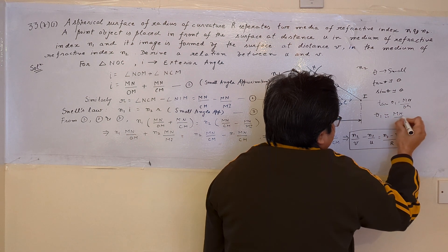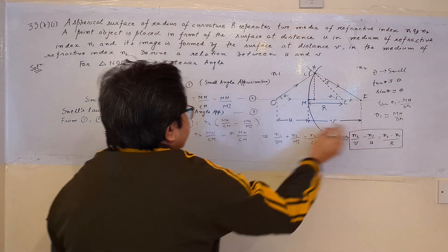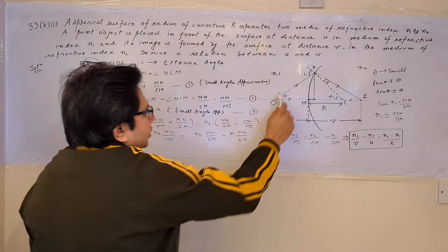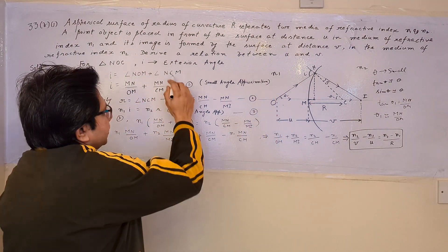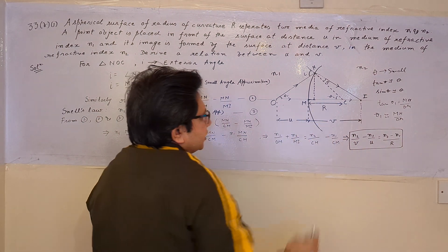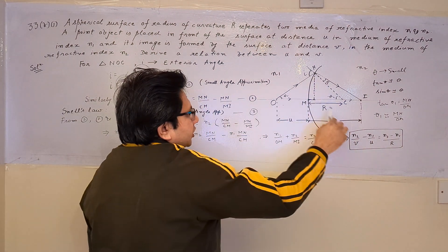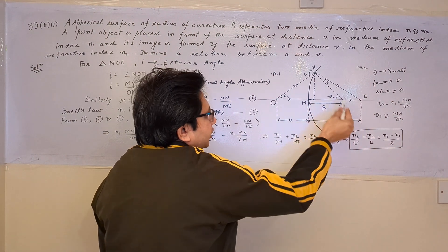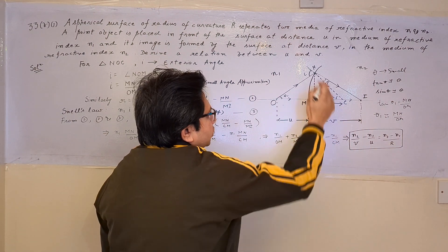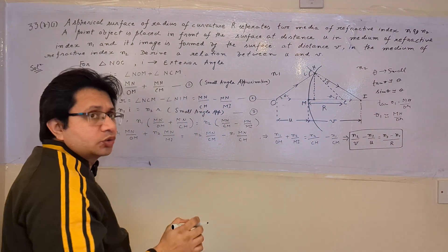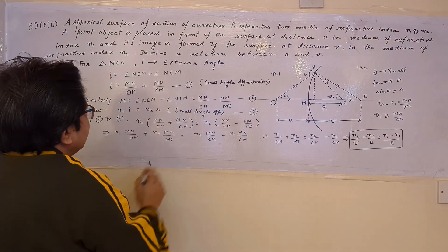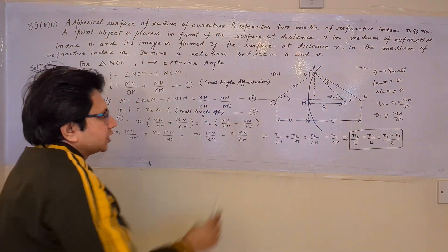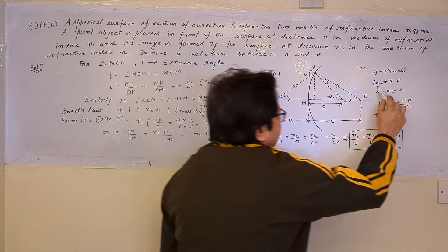So we put MN upon OM in place of angle NOM. Similarly, from triangle NCM, tan theta2 equals MN upon CM, so theta2 is nearly equal to MN upon CM. Therefore, angle I equals MN upon OM plus MN upon CM. This is equation 1, derived using the small angle approximation that tan theta is nearly equal to theta.